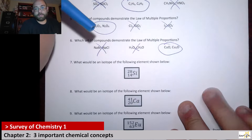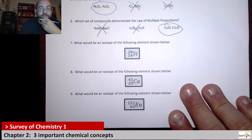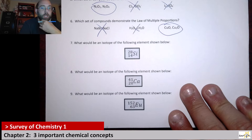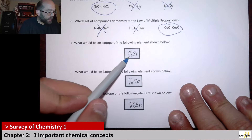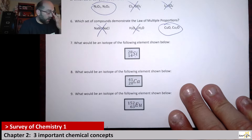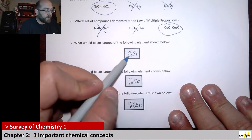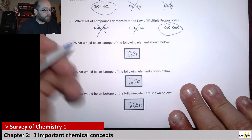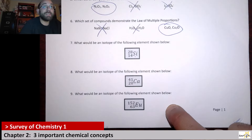That's two laws covered. Now questions seven, eight, and nine ask: what would be an isotope of the following element shown below? Question seven is specifically about silicon, shown with the numbers 28 and 14. When we see this type of notation for an element, these numbers pertain to something specific — and note that this is not how it's shown on the periodic table; this is something a little different.